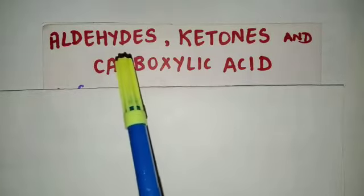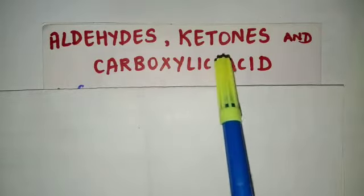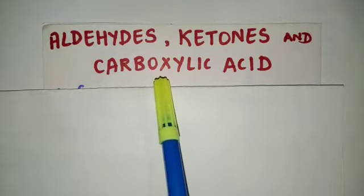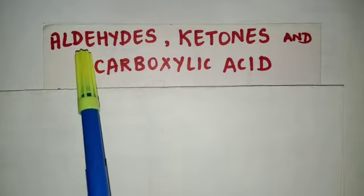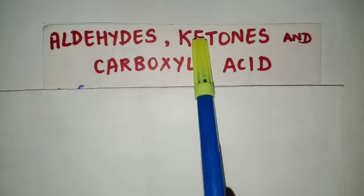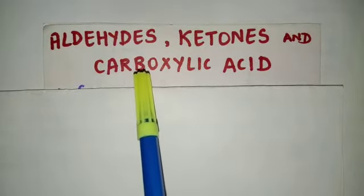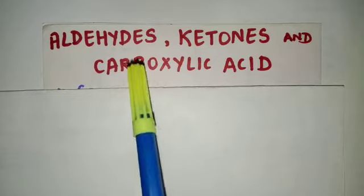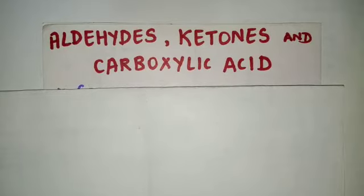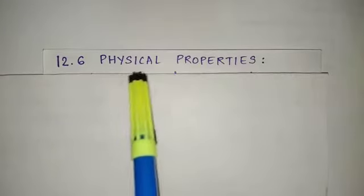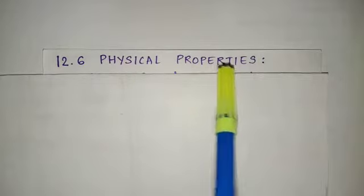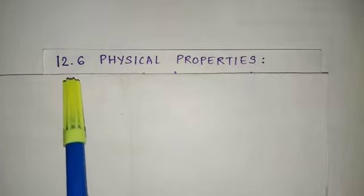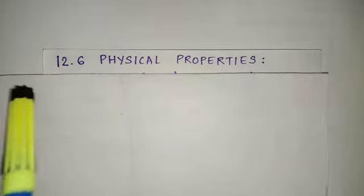Hello students, we are studying the chapter aldehydes, ketones and carboxylic acid. We have finished with methods of preparation of aldehydes, ketones and methods of preparation of carboxylic acid. Now we will be seeing the physical properties, that is topic 12.6 of your textbook.